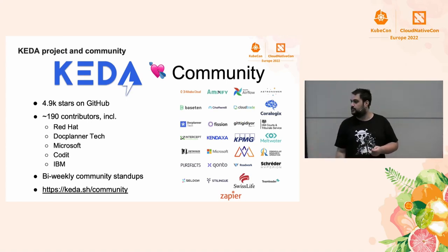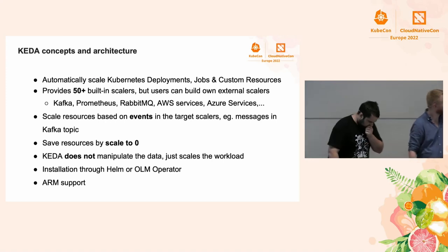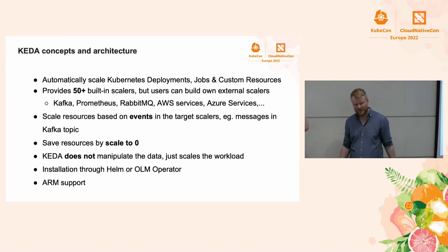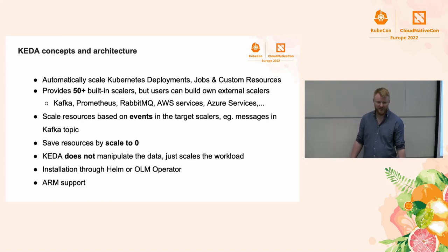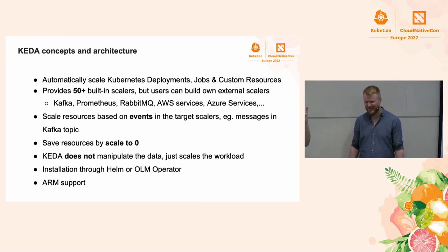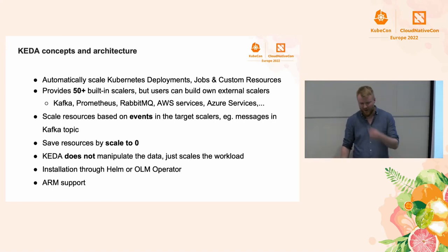Let's talk about the concepts and architecture. We are autoscaling Kubernetes Deployments, but you can also spawn Kubernetes Jobs based on events, and you can target custom resources if they implement the right interface — for example, Argo Rollouts. We have 50-plus scalers covering different services: AWS, Azure, RabbitMQ, Kafka, and many more. The main concept is simple: we scale based on events in the target system.